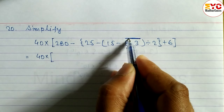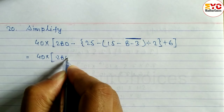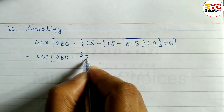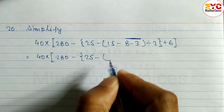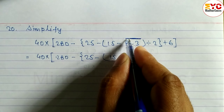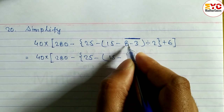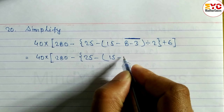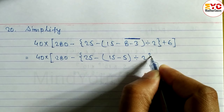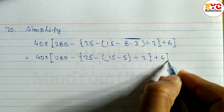First of all, solve the small brackets. We have 280 minus 25, minus 25, minus 15. This bar is 8 minus 3, so subtract: 8 minus 3 is 5. Then divide by 2, plus 6 in bracket.